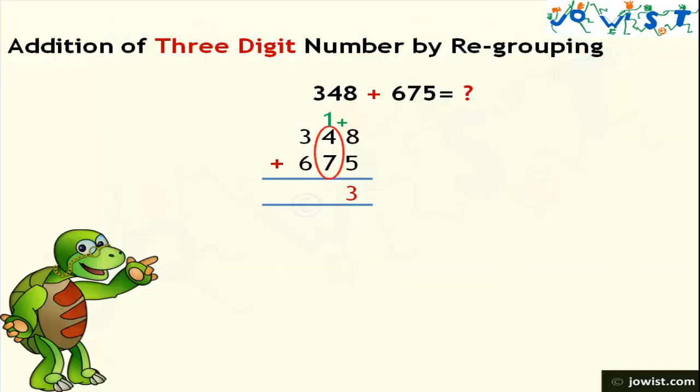Next we will add the digits in the tens place. Adding 4 and 7 gives a result of 11. In this we will add 1 which was carried over from the addition of digits in the ones place, making the result 12. 12 has a value of 2 tens and 1 hundred. 1 will be carried over to hundreds place and 2 will be written in the tens place.